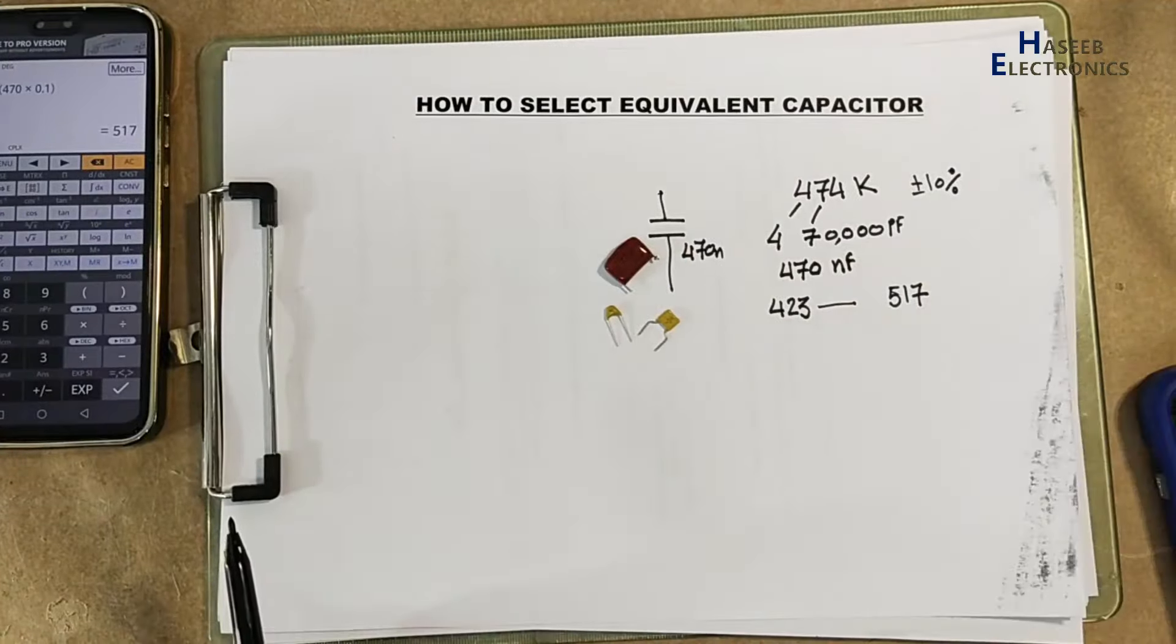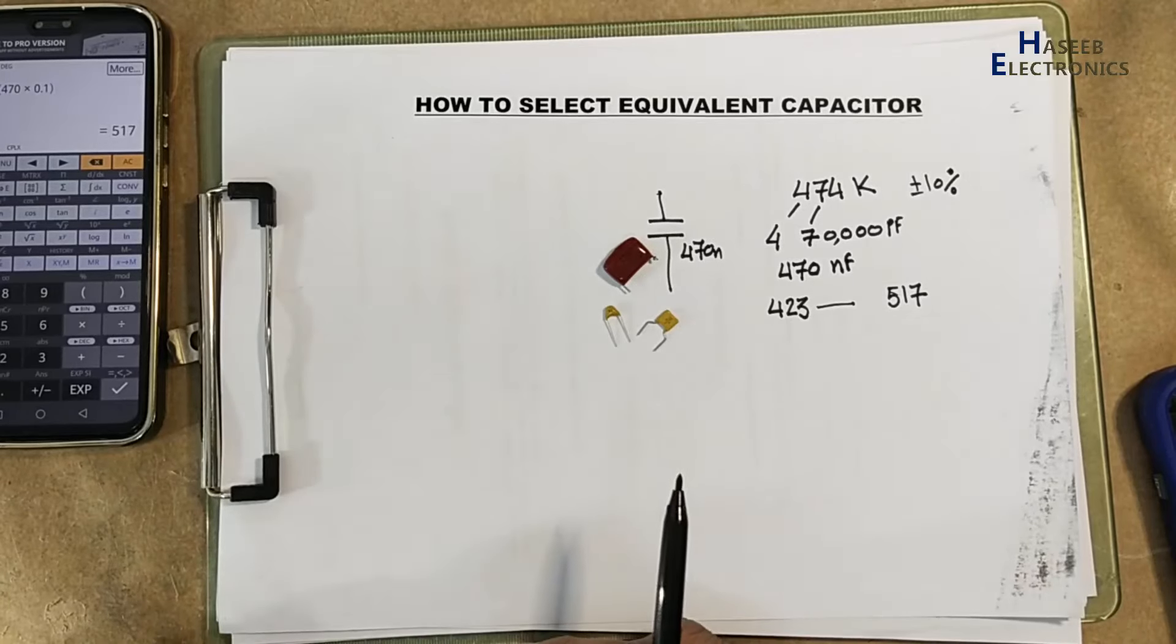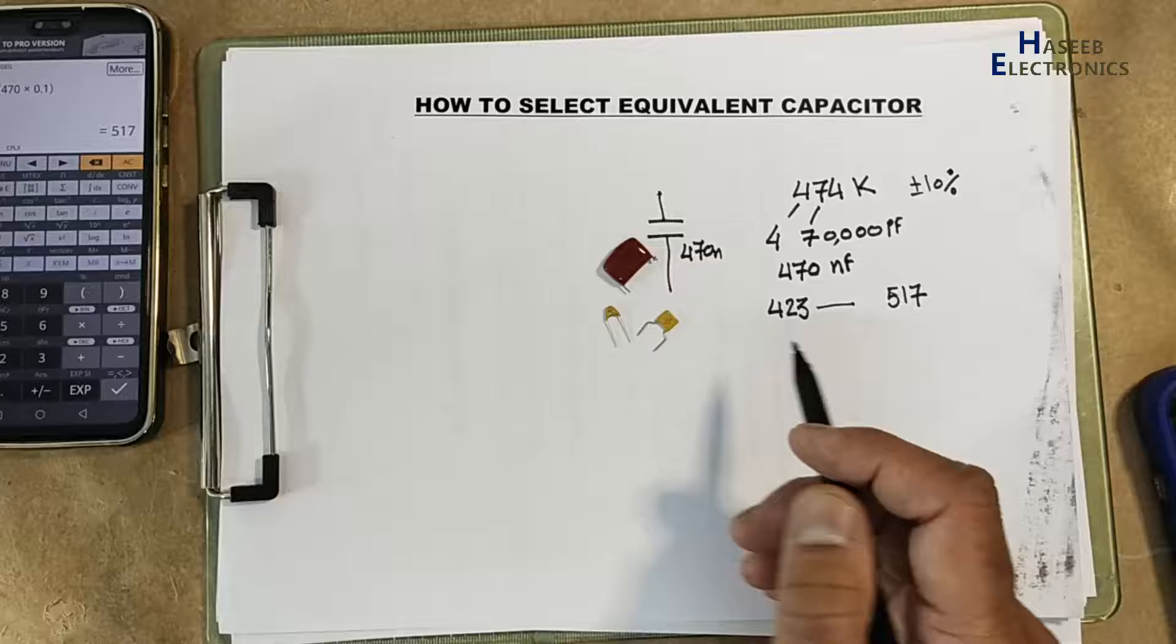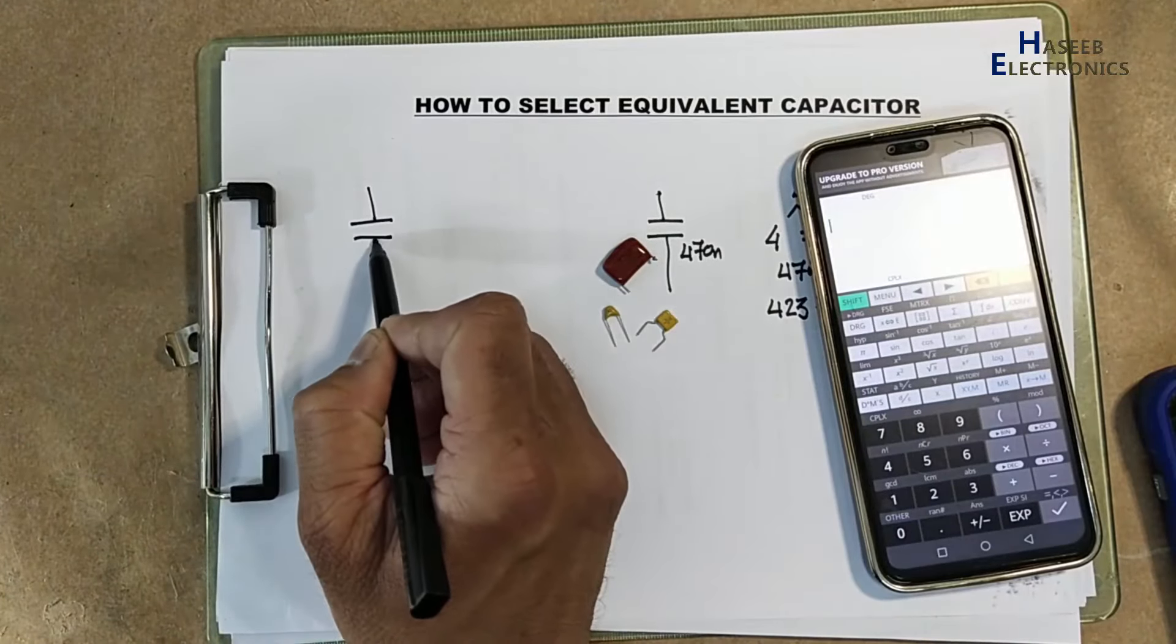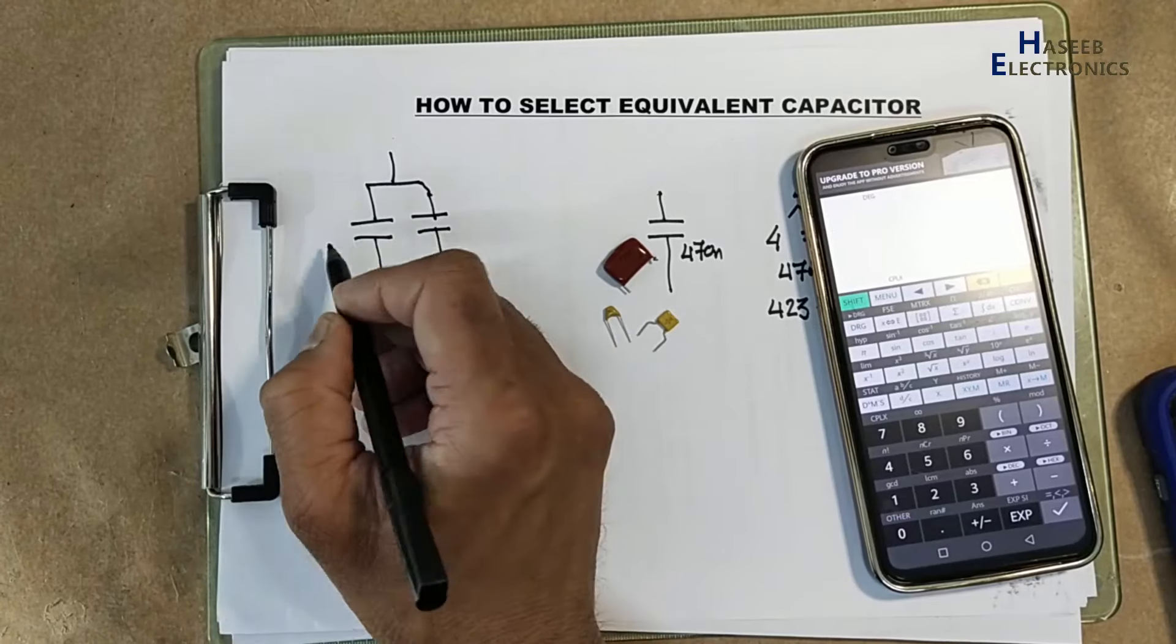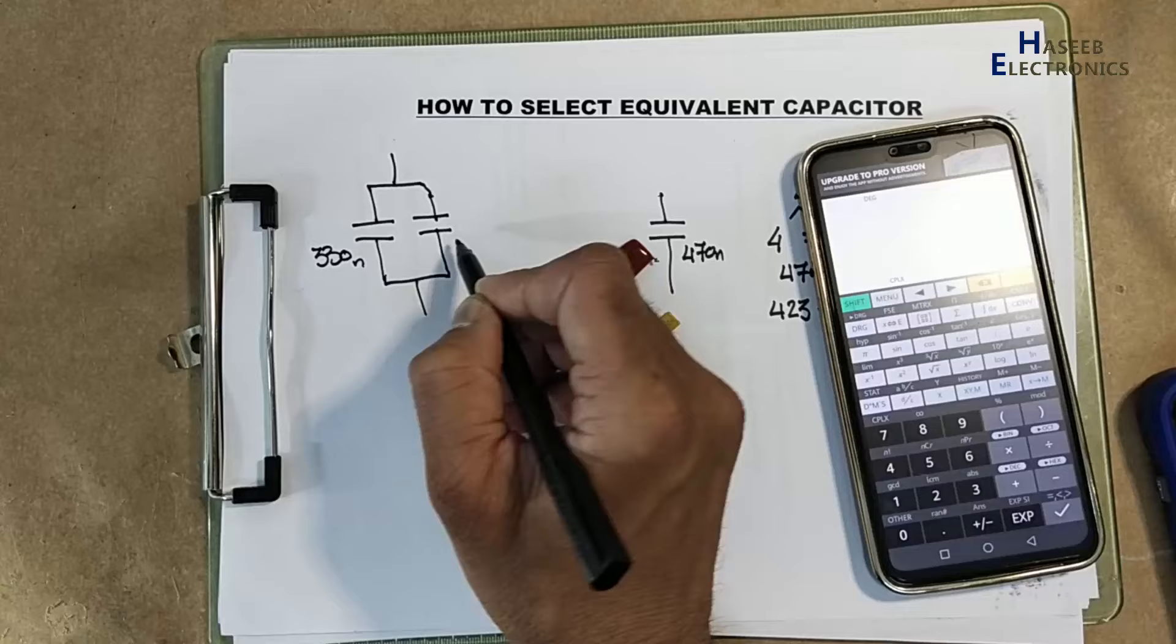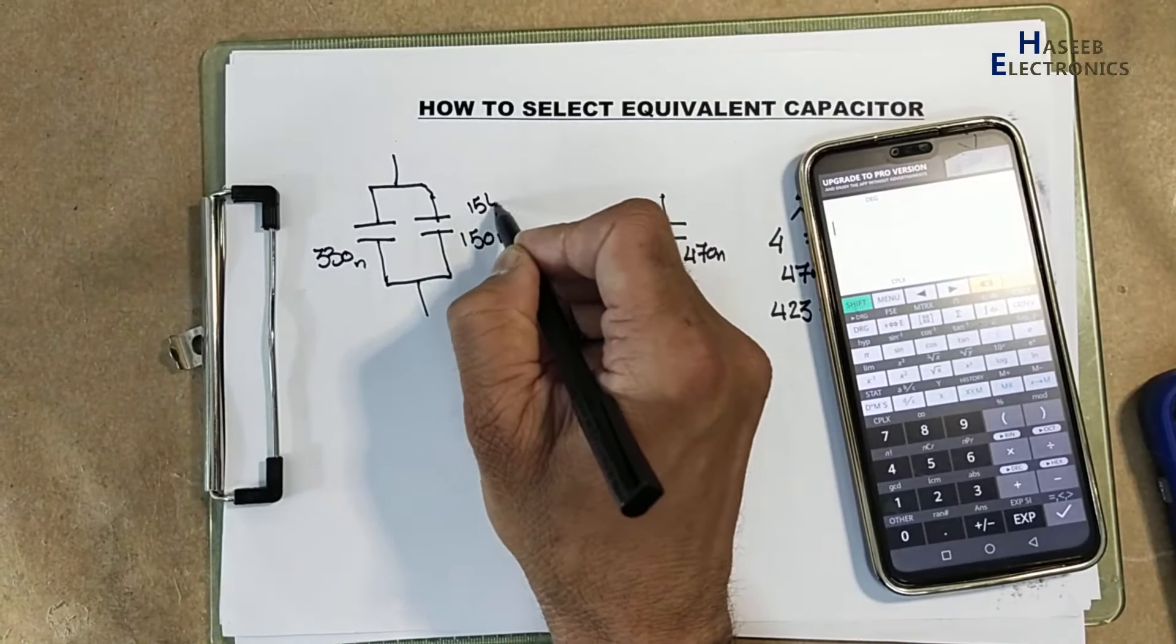334 code. These are two capacitors. Always verify the voltage rating. If we connect two capacitors in parallel, 330 nano, 150 nano, 154 PF code.